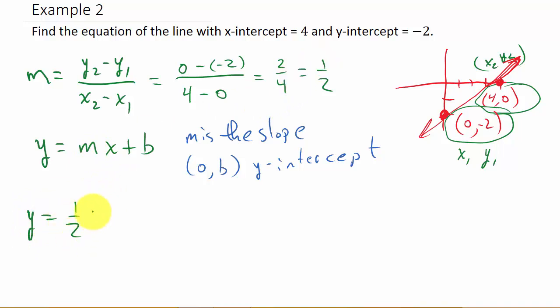x, plus, and look, 0b. That's your y-intercept. What's our y-intercept? It's this point right here. What's b? b is negative 2. And see there's 0b, so plus negative 2. So y equals 1 half x minus 2. And there's your equation of the line.